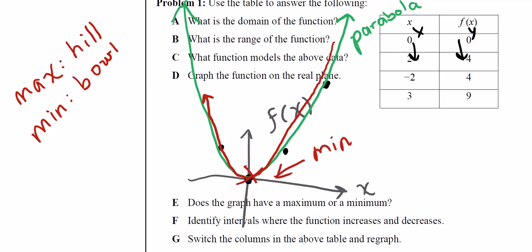So anytime there's something of a bowl or a valley, it's a minimum. So for example, if I'm looking at this region right here, for this graph, you'll know there's a minimum right here because it's a bowl or a valley.